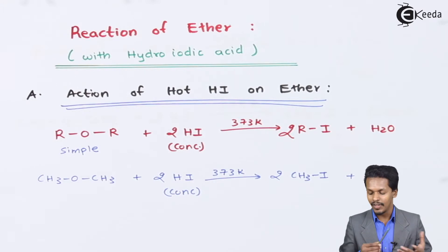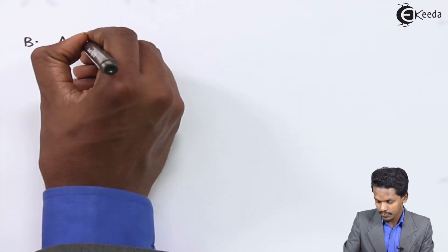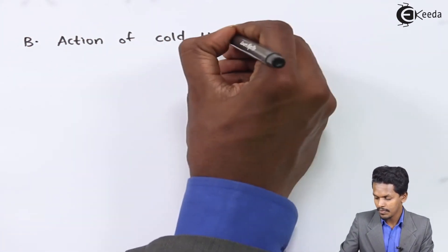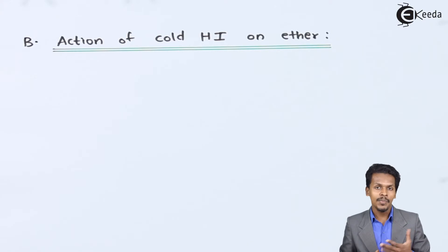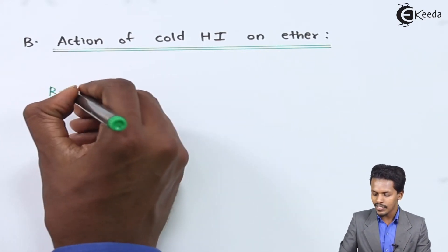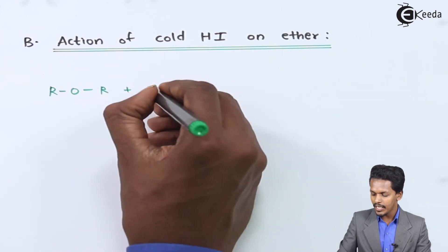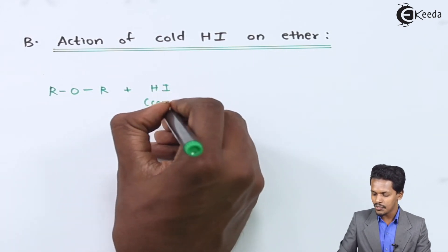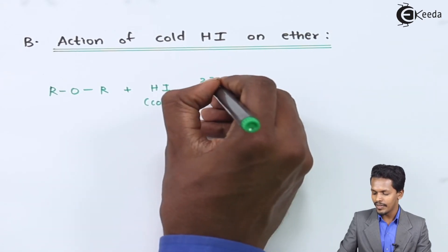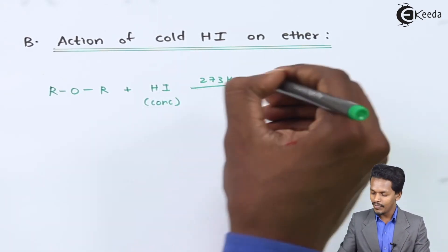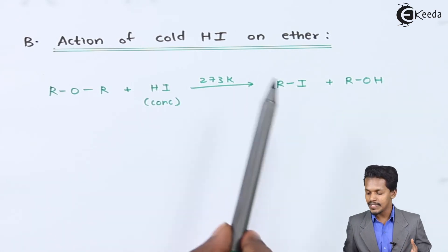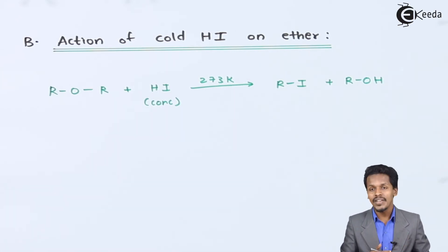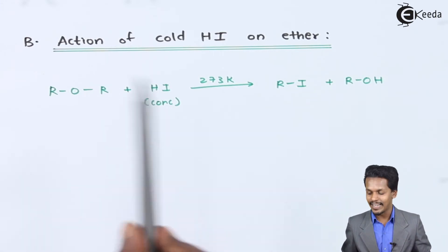Now for Point B: the action of cold HI on ether. For a simple ether ROR treated with concentrated HI at cold conditions — 273 Kelvin — the products are RI along with ROH. So we get a mixture of an alkyl iodide and an alcohol.